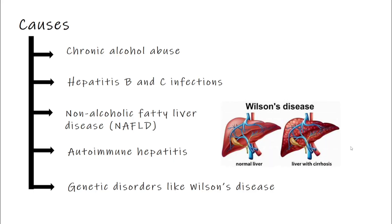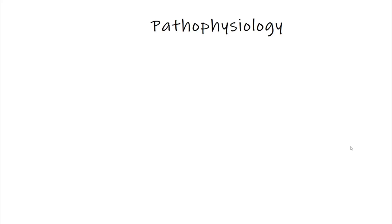And lastly, genetic disorders like Wilson's disease, where harmful substances like copper build up in the liver — it mainly damages the liver, eyes, and brain. So as you can see, liver cirrhosis can have many causes, not just alcohol.